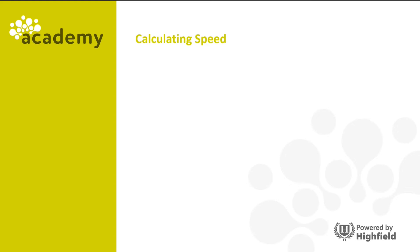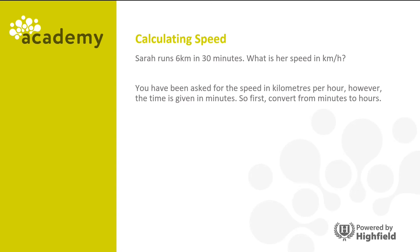Let's look at calculating speed. Sarah runs 6 kilometers in 30 minutes. What is her speed in kilometers per hour? You've been asked for the speed in kilometers per hour, however the time is given in minutes. So first we need to convert from minutes to hours. 30 minutes is half an hour or 0.5 hours. Now work out the speed using the formula: speed equals distance divided by time. So that's 6 divided by 0.5, which gives us 12 kilometers per hour.